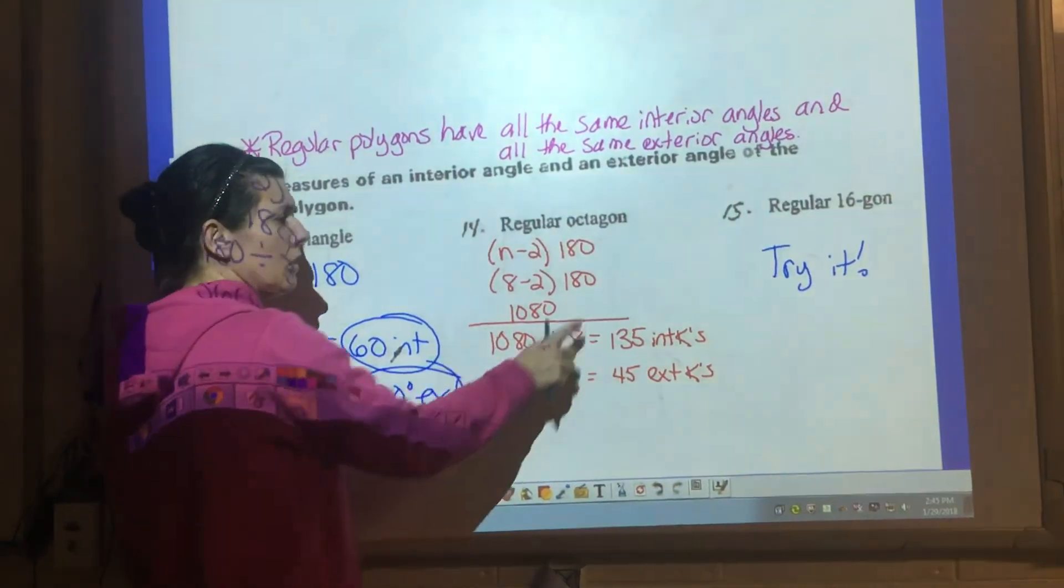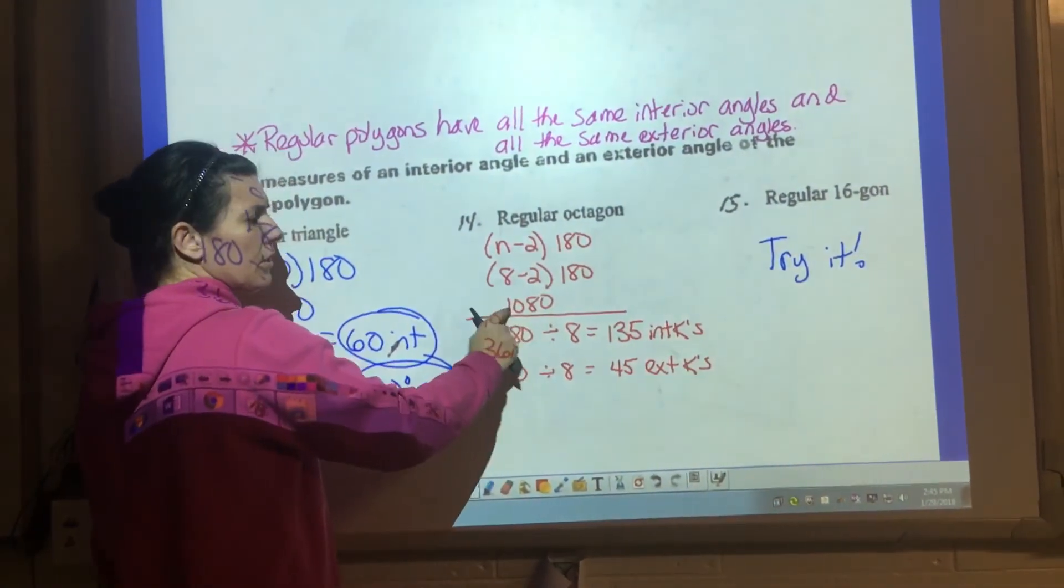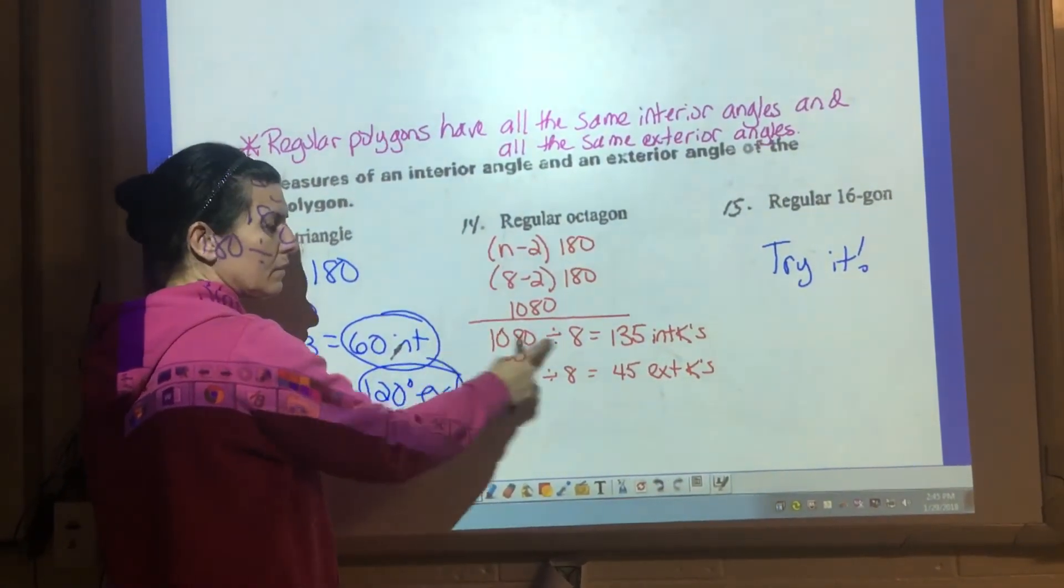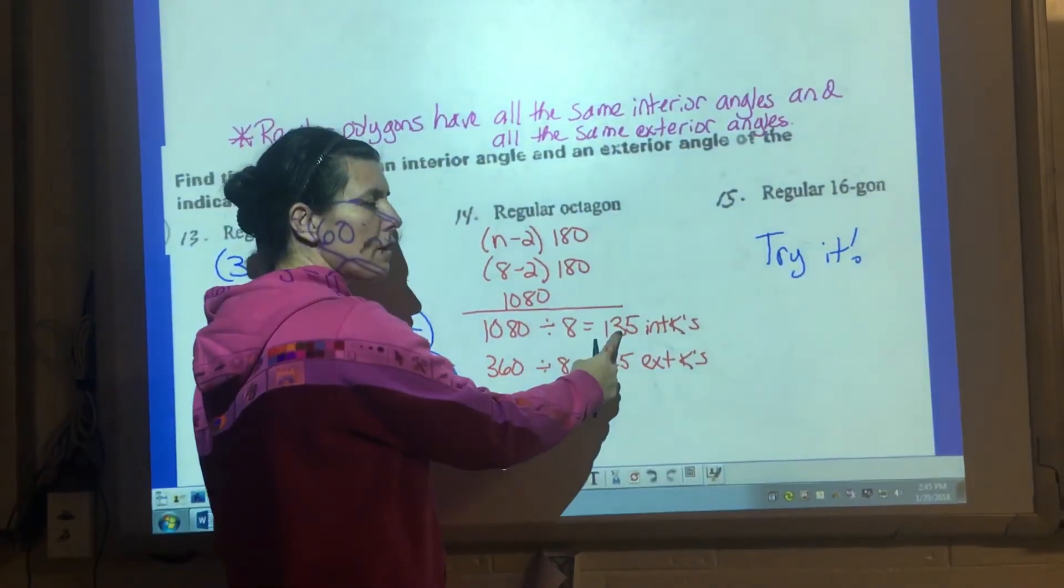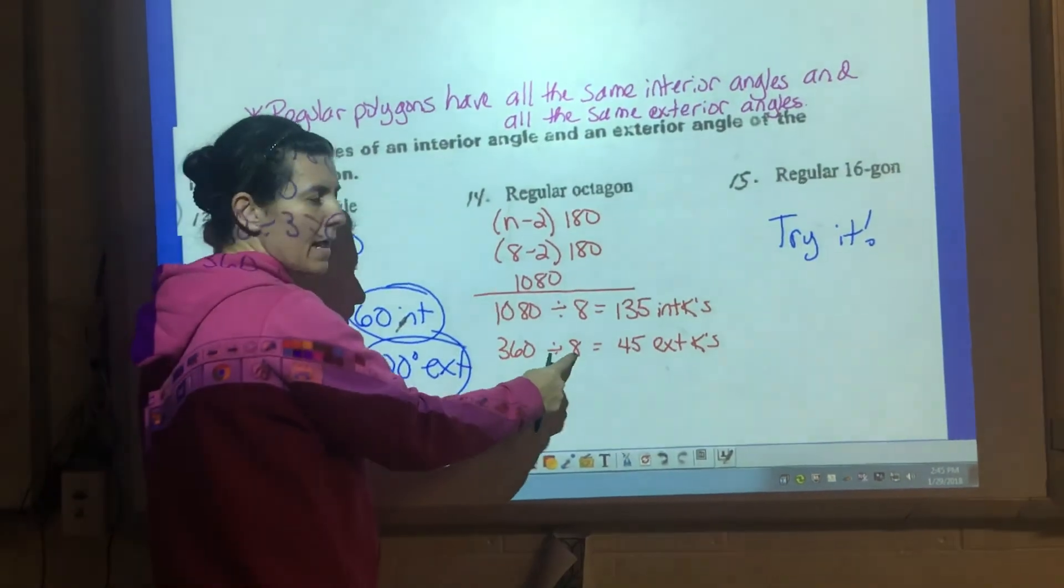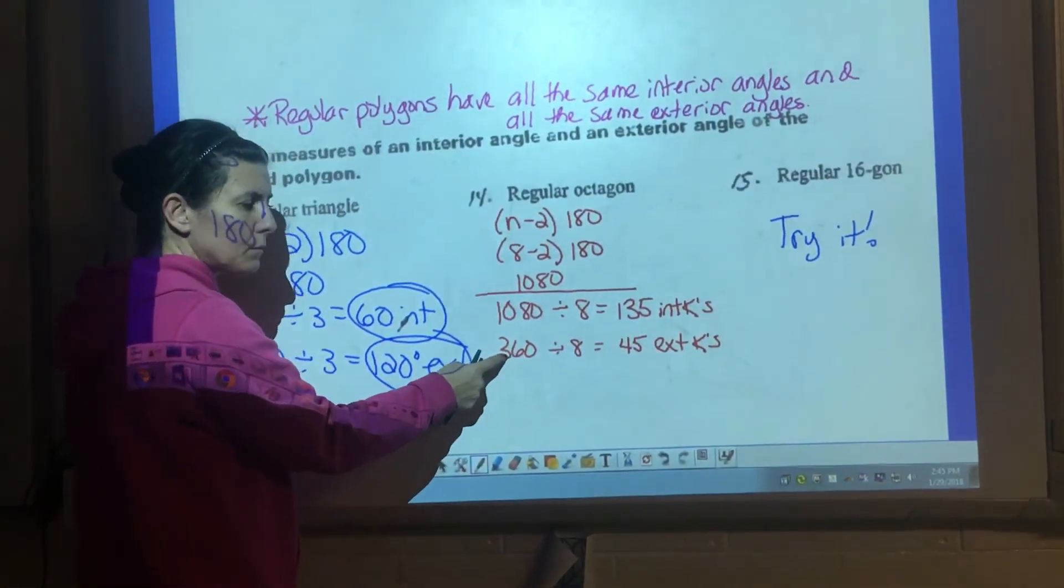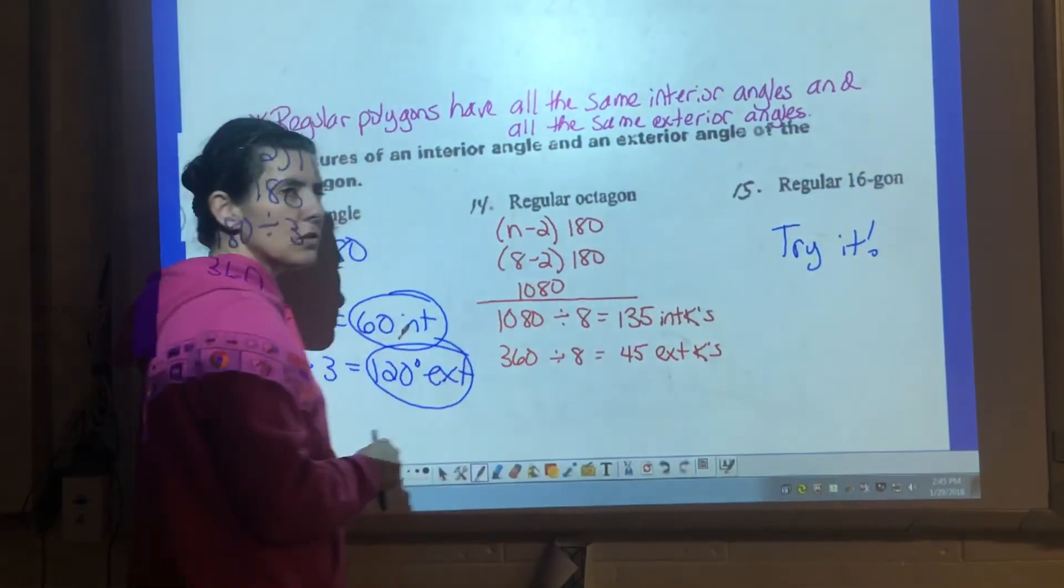Similar idea with the octagon. We know that the interior angles add up to 1080. Divide by 8 because there's 8 of them that are the same. Each interior angle is 135. 360 divided by 8 for exterior because they always add up to 360. Exterior angle is 45.